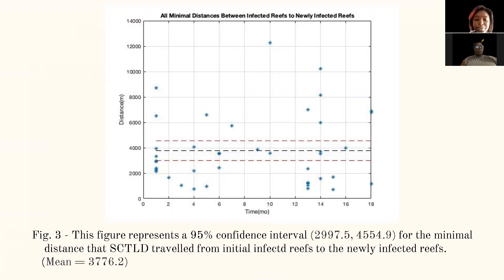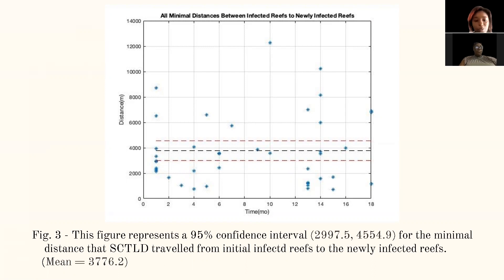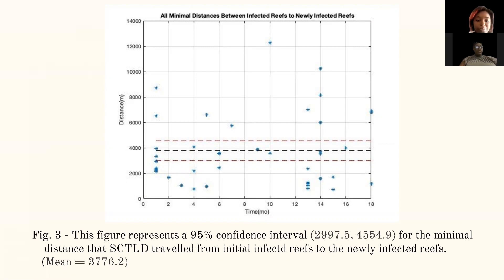Here we have another 95 percent confidence interval for all the minimal distances that SCTLD traveled from the initial infected reefs to newly infected reefs. The average distance was 3,776.2 meters, and the confidence interval generated was between 2,997.5 and 4,554.9 meters. We are 95 percent confident that the rate of the disease falls between the two red lines on the graph.